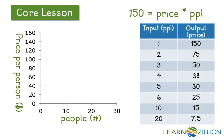Remember our function: $150 equals price times people. Let's go ahead and make an input-output table — I've found how much it would cost for each of these inputs, the number of people. I'm going to plot each one of these on our graph. As we do this, you'll notice that it starts out very expensive for just one person, but as we add more and more people, the cost per person goes down significantly. As we connect these points to make our rational function, you'll notice that it looks like it's heading downwards.